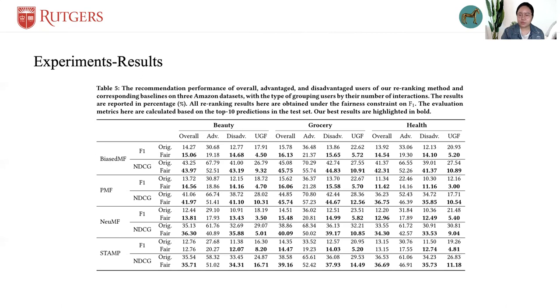Although we sacrificed some of the average recommendation performance of the advantaged users, the constraint that decreases the disparity between the two groups substantially improves the performance of the disadvantaged group,